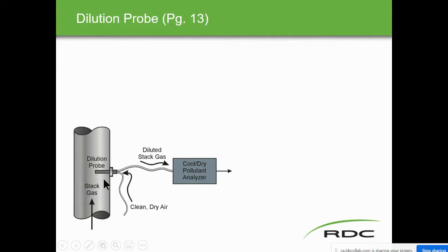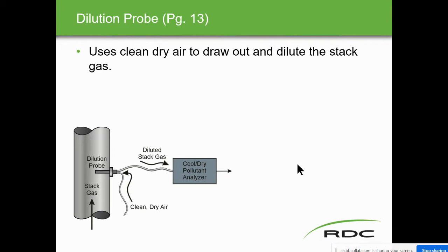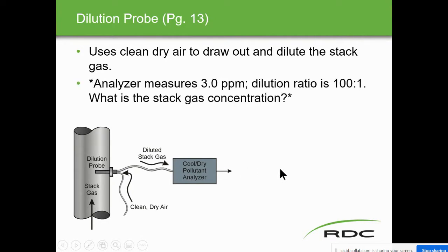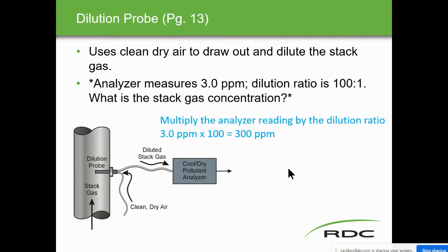Dilution probe: clean, dry air draws out and dilutes the stack gas sample. The analyzer measures three parts per million. With a dilution ratio of 101, you multiply the analyzer reading by the dilution ratio: 3 ppm × 100 = 300 parts per million. Simple math. The stack concentration is calculated on page 13.